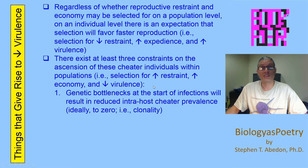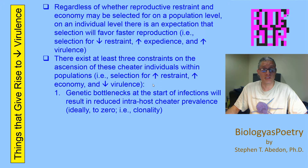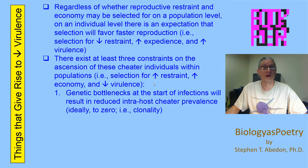So what are these three constraints on the ascension of cheater individuals? The first we've talked about is genetic bottlenecking. If you start infections with just a single individual and thus achieve clonality, then at the start of infections there will be zero genetic variation within the population. If there's no genetic variation, then there is no variation in virulence between individuals within the population, and therefore you cannot have selection for increased levels of virulence.